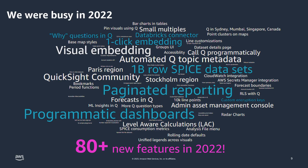We were very busy in 2022. Of those 150 features, 80-plus new features were launched in 2022 alone, which includes why questions in Q, visual embedding, automated Q topic generation, the QuickSight community launch, paginated reports, and a ton of rich authoring capabilities.